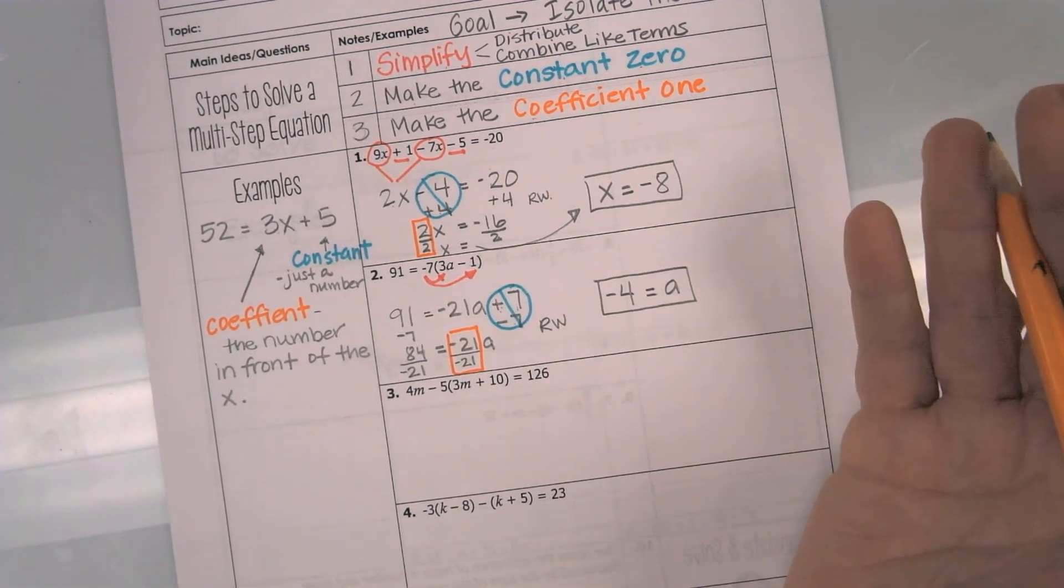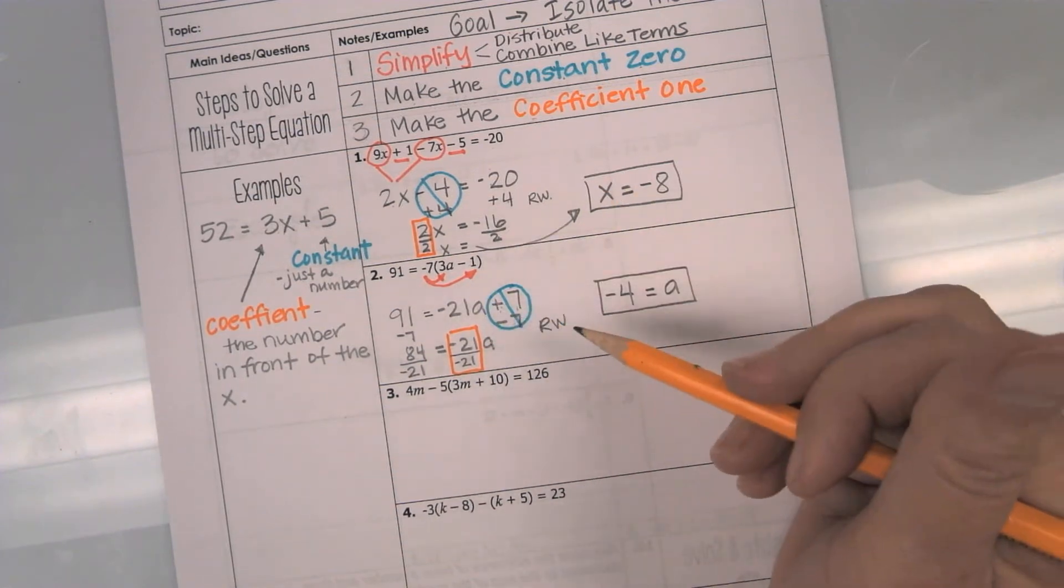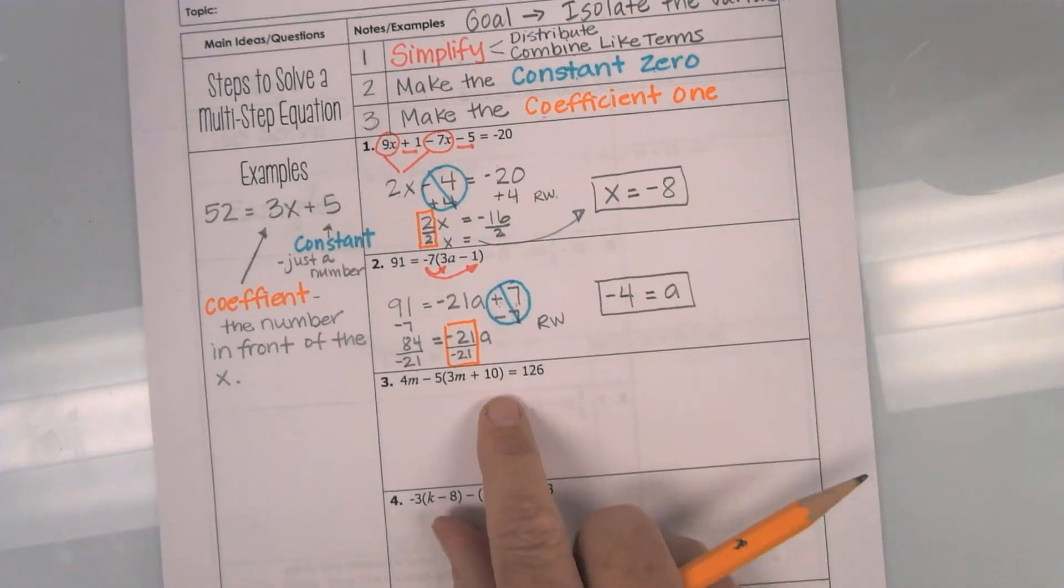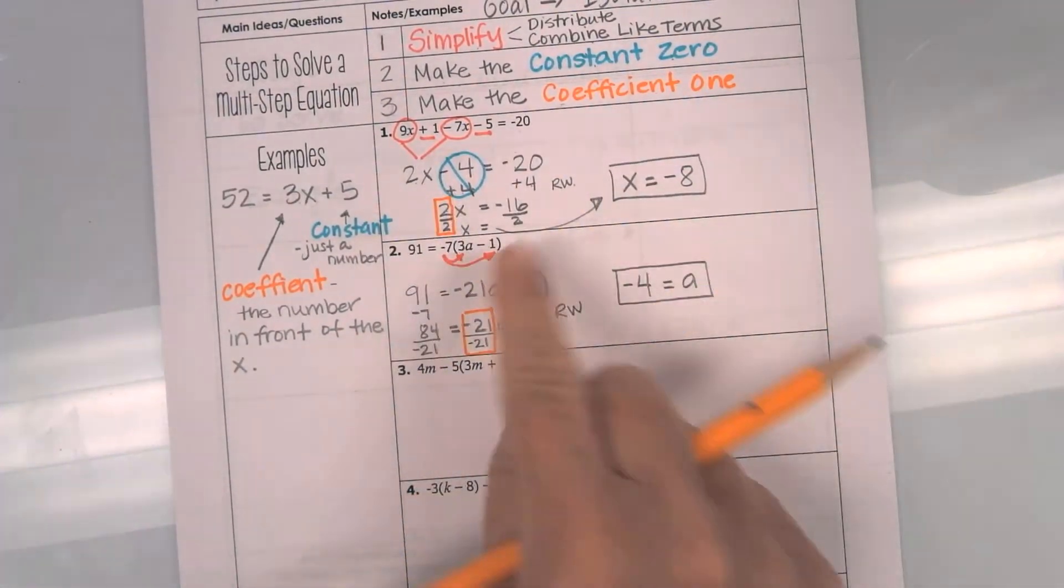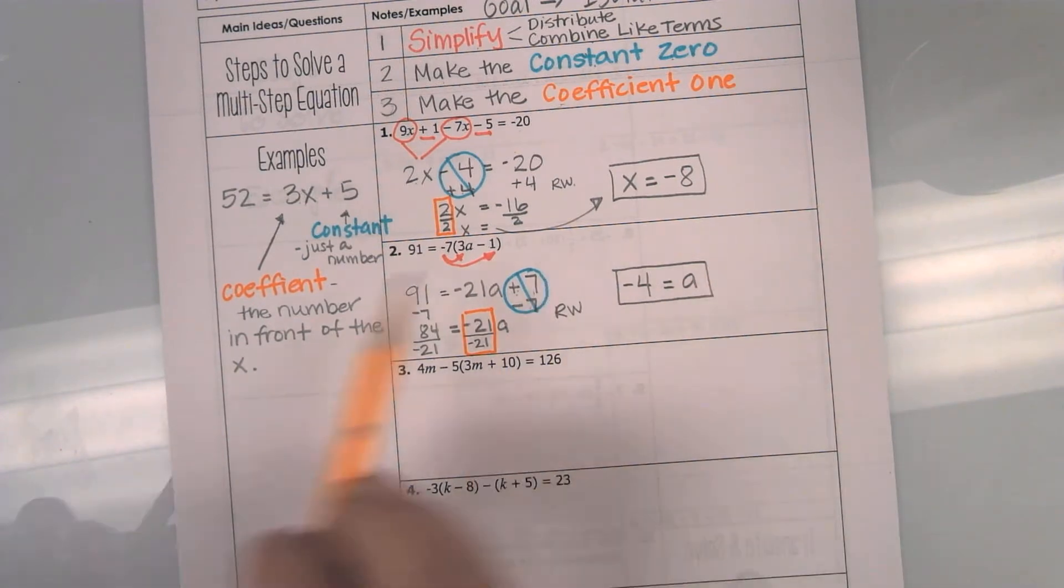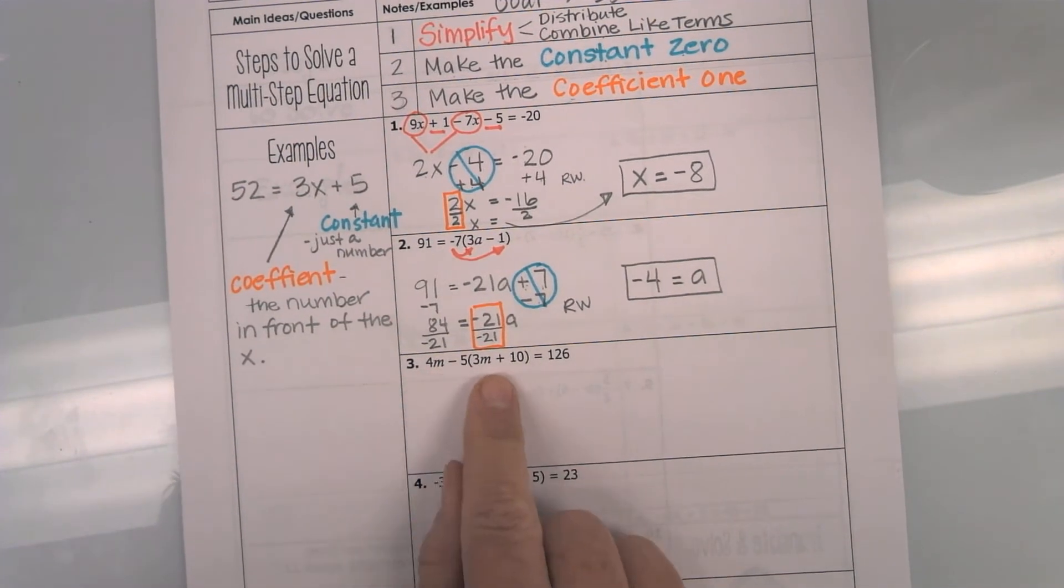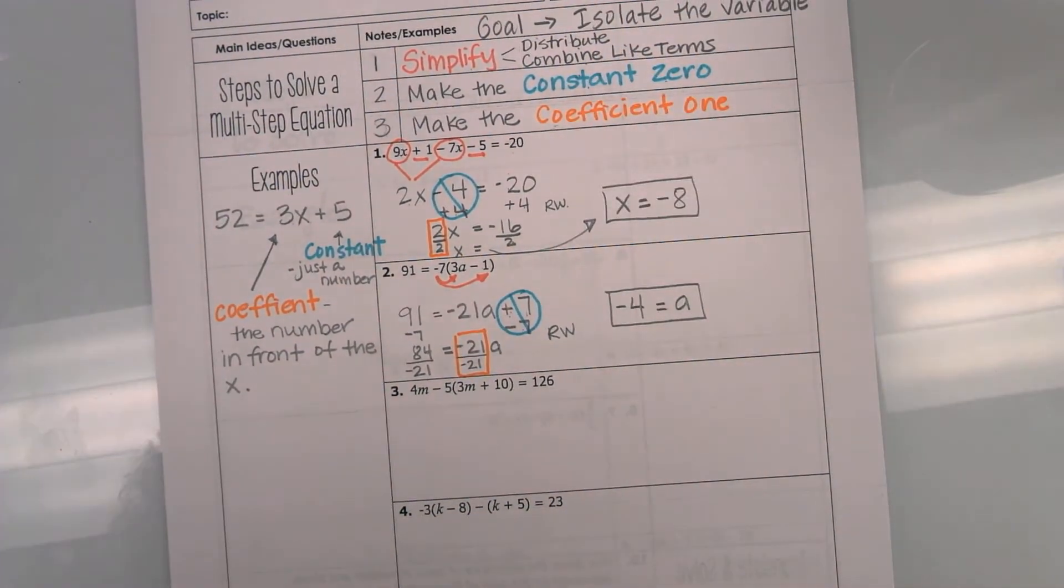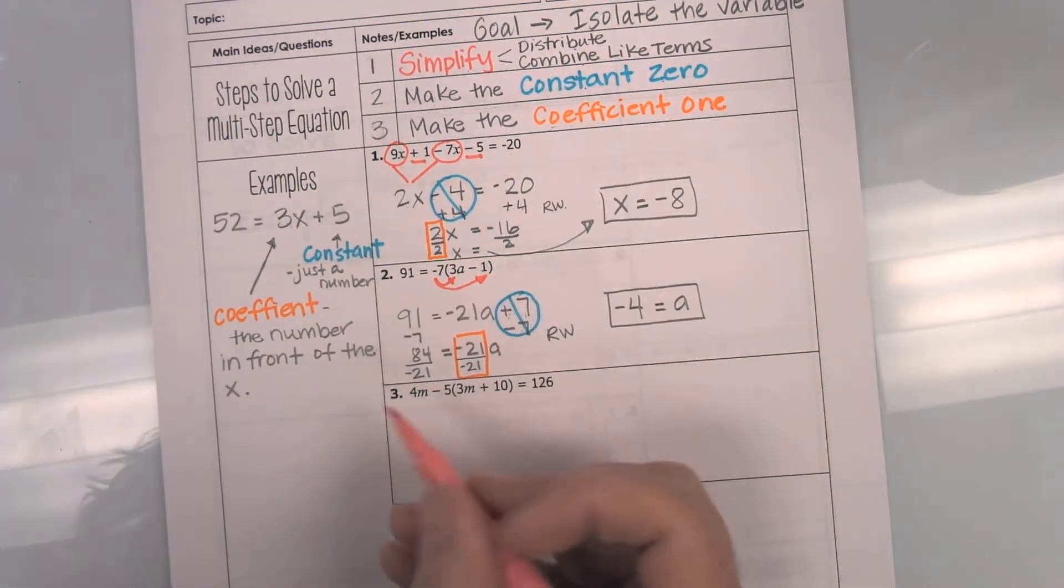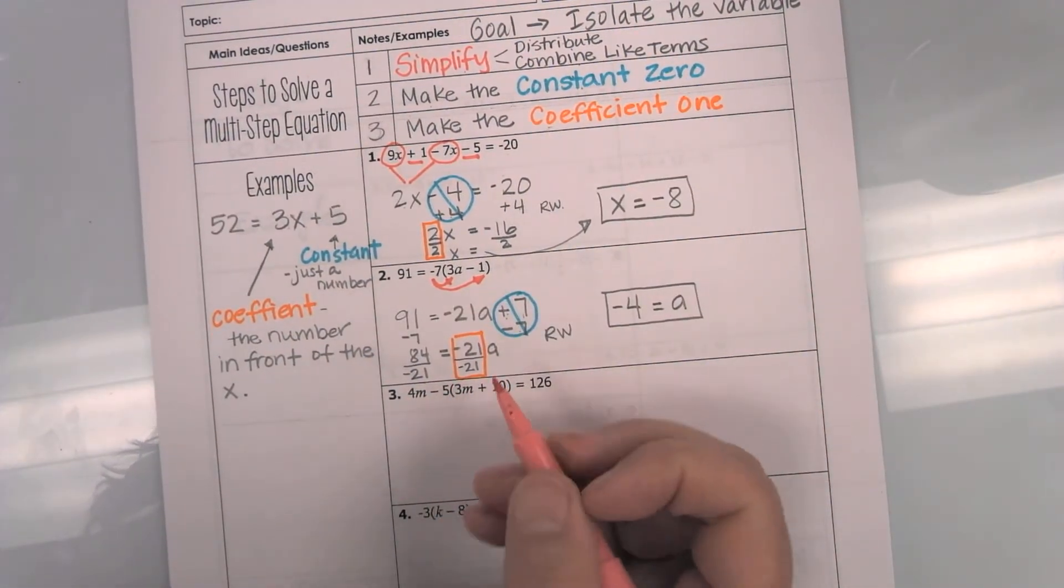Now, if you are good and set and want to go start working on your own, you may. I am going to do one more because it does combine all of the steps of 1 and 2. Okay, number 3. Number 3, notice that we have a lot going on here. We are going to have to do both parts of our simplifying.